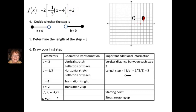The next step: for b, there are two things to determine — the direction of the step and the length of the step. Because our b is negative, the step will go to the left. The length of the step uses the formula 1/b: one divided by one-third equals three, so the length of the step is three. After you've placed the black dot at h, k, go to the left three units. There is our first step.